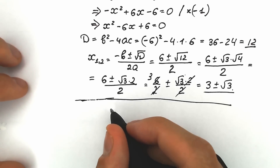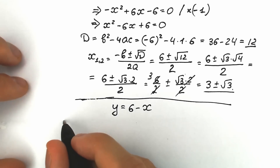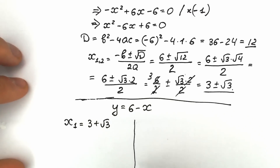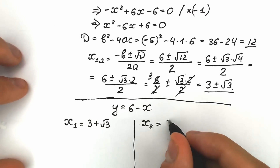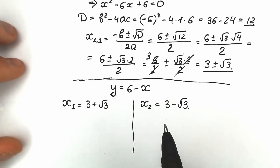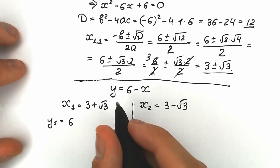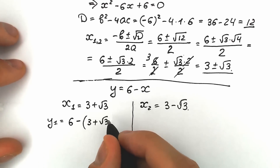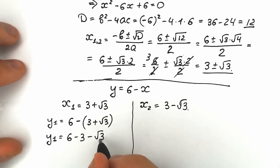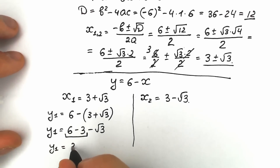These are our x₁ and x₂. Recall that y equals 6 minus x. So let's plug in. x₁ equals 3 plus square root of 3, so y₁ equals 6 minus (3 plus square root of 3), which gives us 6 minus 3 minus square root of 3, and 6 minus 3 equals 3. So y₁ equals 3 minus square root of 3.